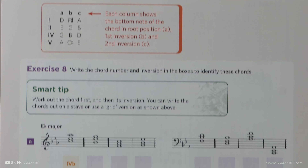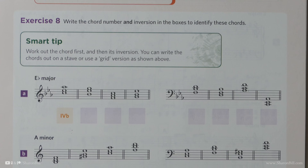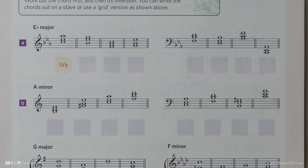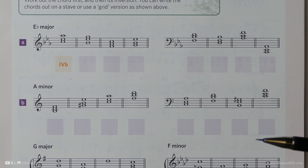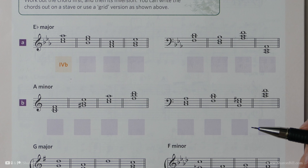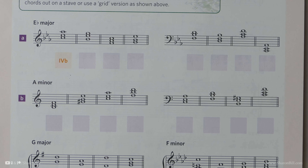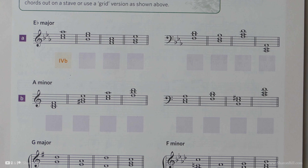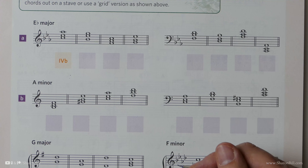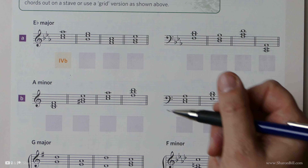Moving on to exercise 8, this gives us the opportunity to explain all of these chords — what number chord it is, describing which step of the scale the chord has been built upon, and also what position the chord is in, describing particularly the bass note. Let's try a few of these together, and then as soon as you feel able, press pause and try on your own. It's much better to try on your own — you work more actively and learn more thoroughly. It's okay to make mistakes; it's much better than learning passively just by copying. Just erase them and have another go.